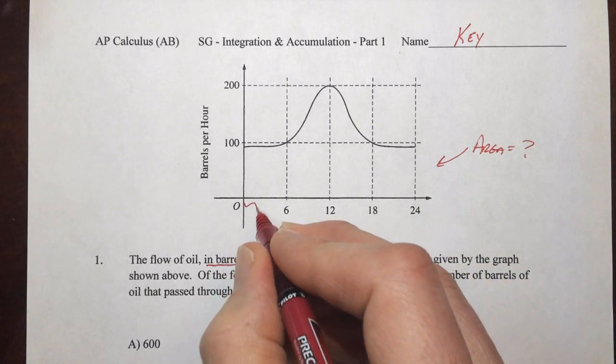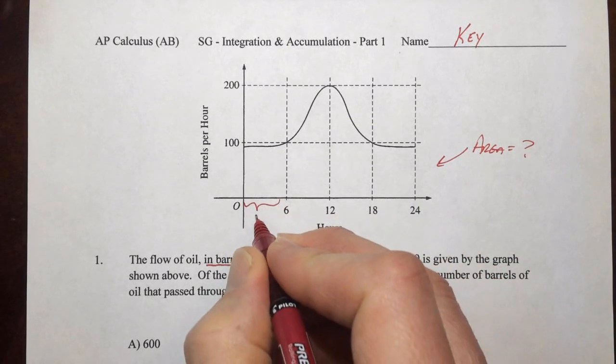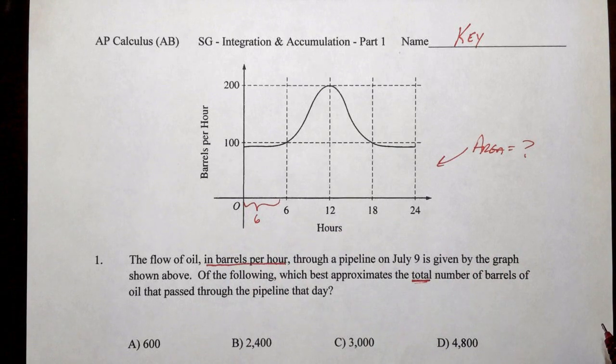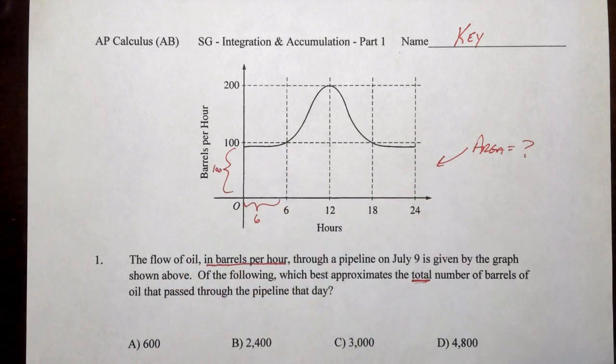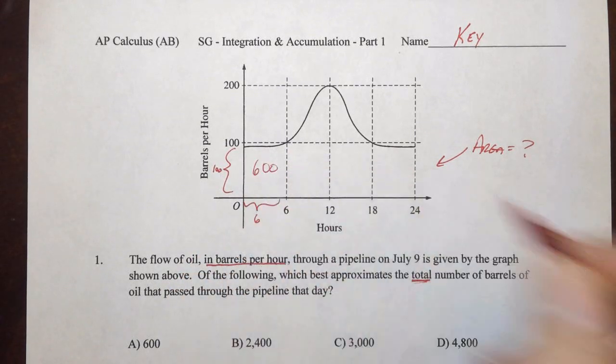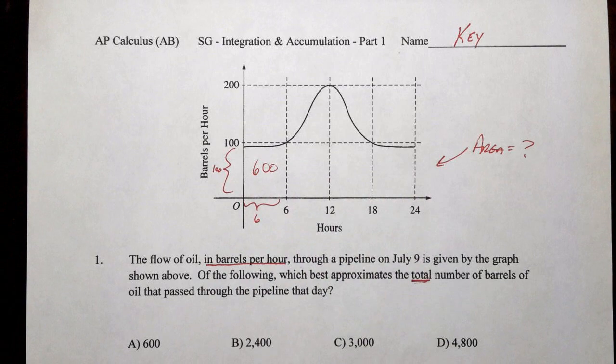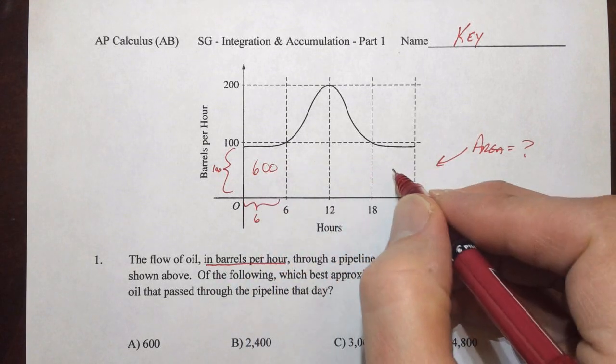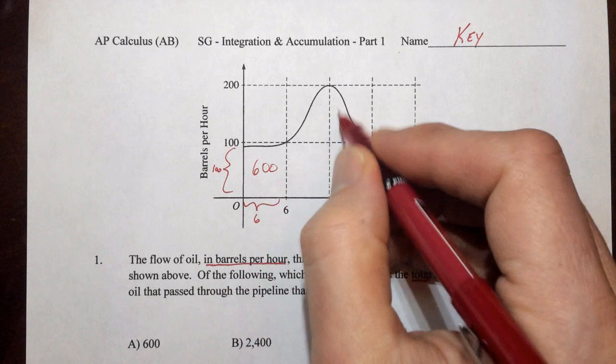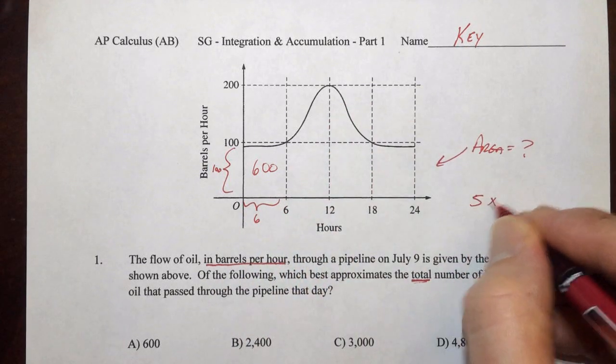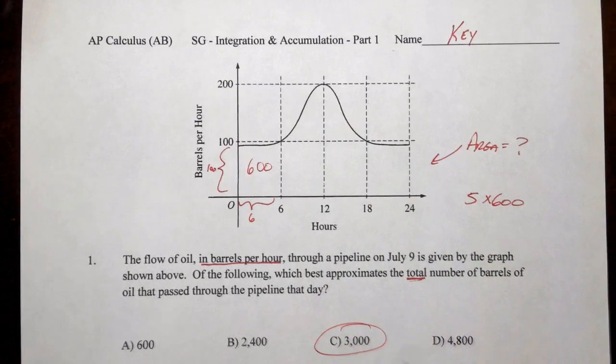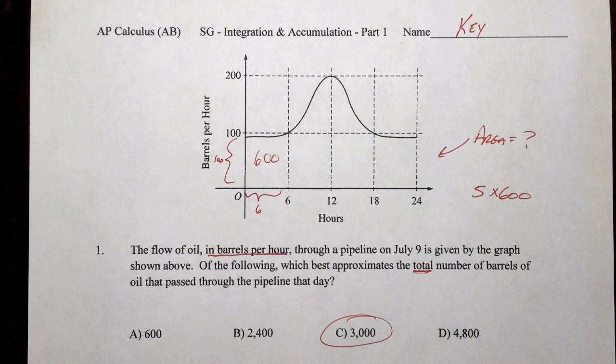So we see that our units for each grid horizontally are 6 and vertically are 100. So each one of these blocks is about 600 barrels. So we've got 1, 2, 3, 4, and then up here we have about a fifth one. So we basically have 5 times 600. So the solution that we're looking for is 3,000 barrels of oil.